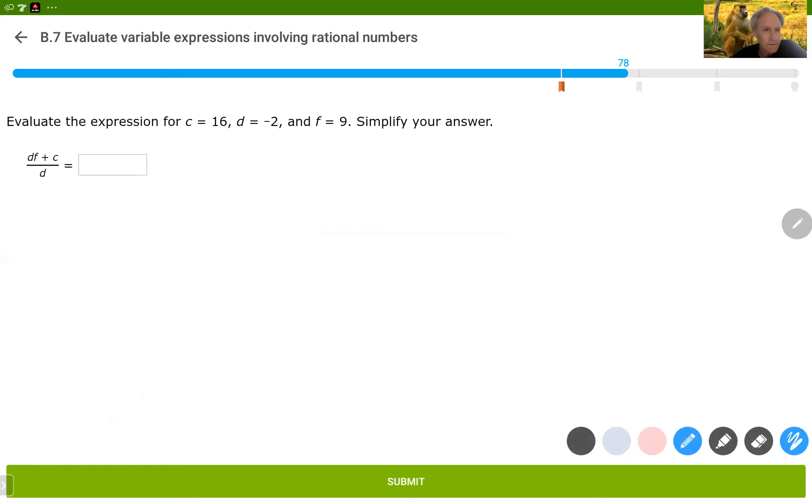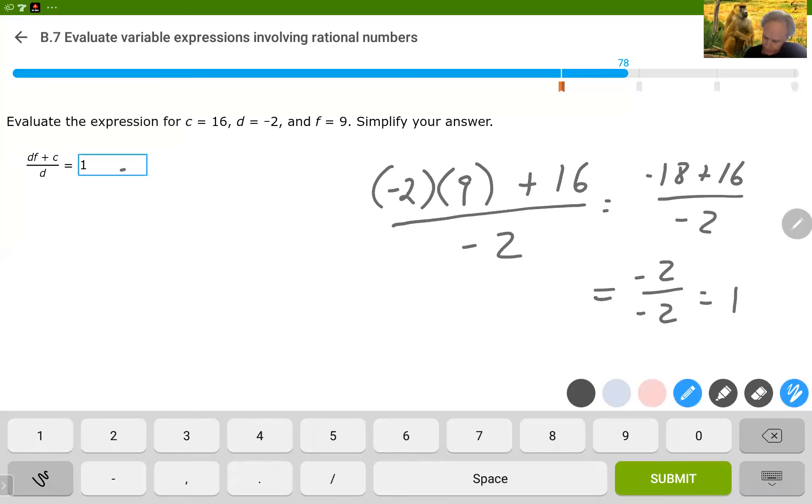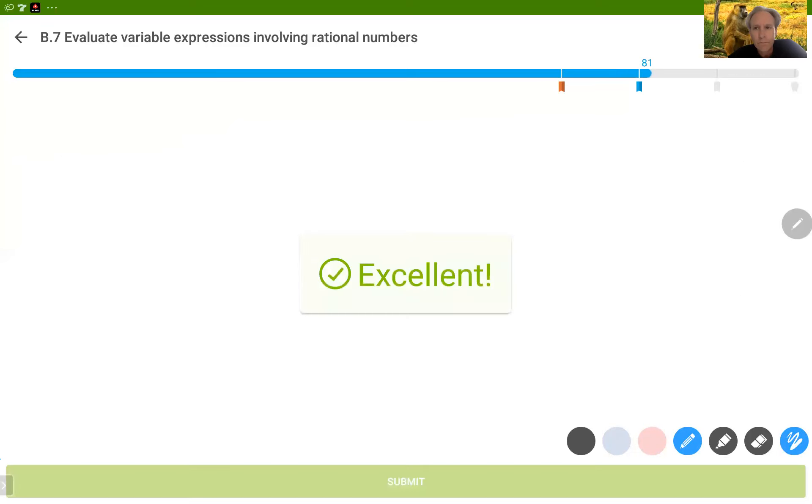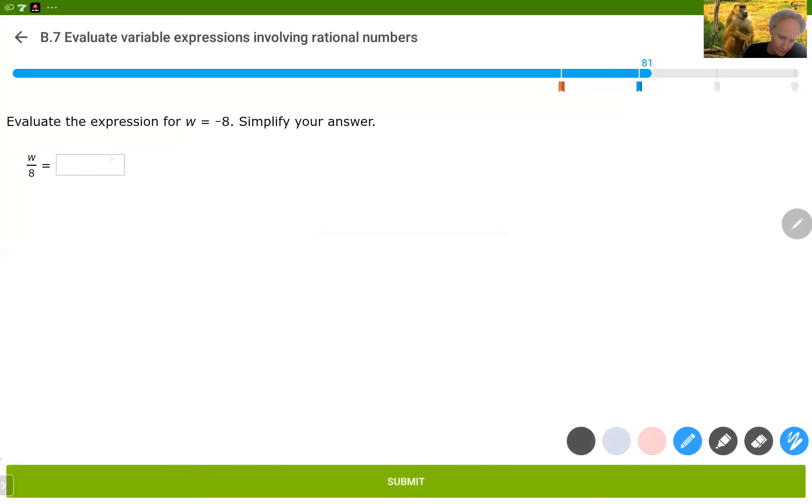Okay, so df, which is negative 2 times 9 plus c all over d. That's negative 18 plus 16 over negative 2, which is negative 2 over negative 2, which is 1. Negative 8 over 8 is negative 1.